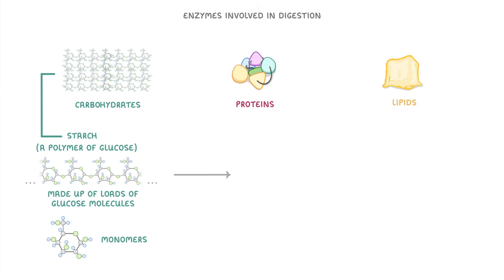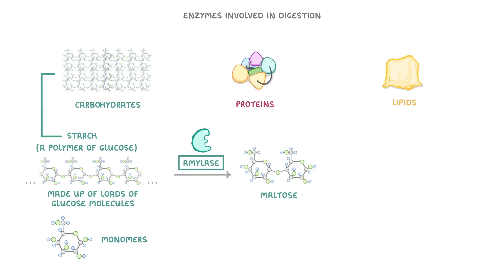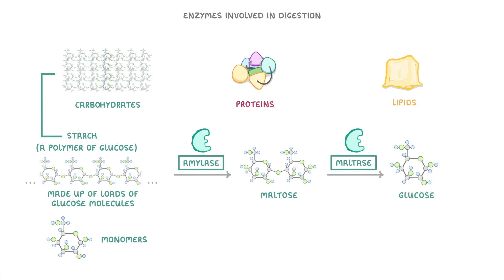In order to break the starch down, we first use the enzyme amylase, which breaks it into maltose molecules. These are basically just two glucose molecules stuck together. And then the enzyme maltase breaks the maltose down into glucose, which is now small enough for us to absorb.